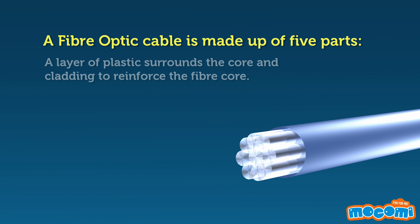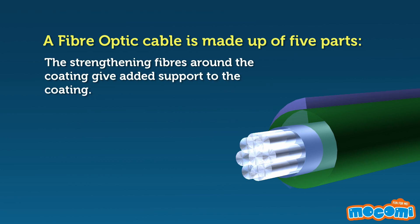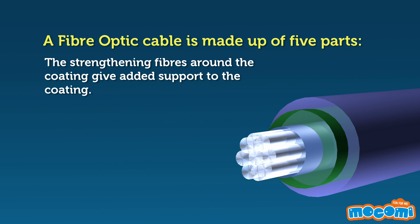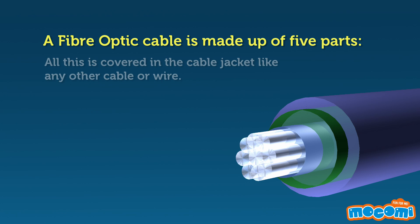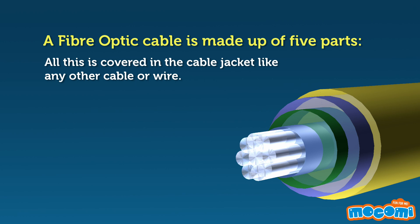A layer of plastic surrounds the core and cladding to reinforce the fiber core. The strengthening fibers around the coating give added support. All this is covered in the cable jacket, like any other cable or wire.